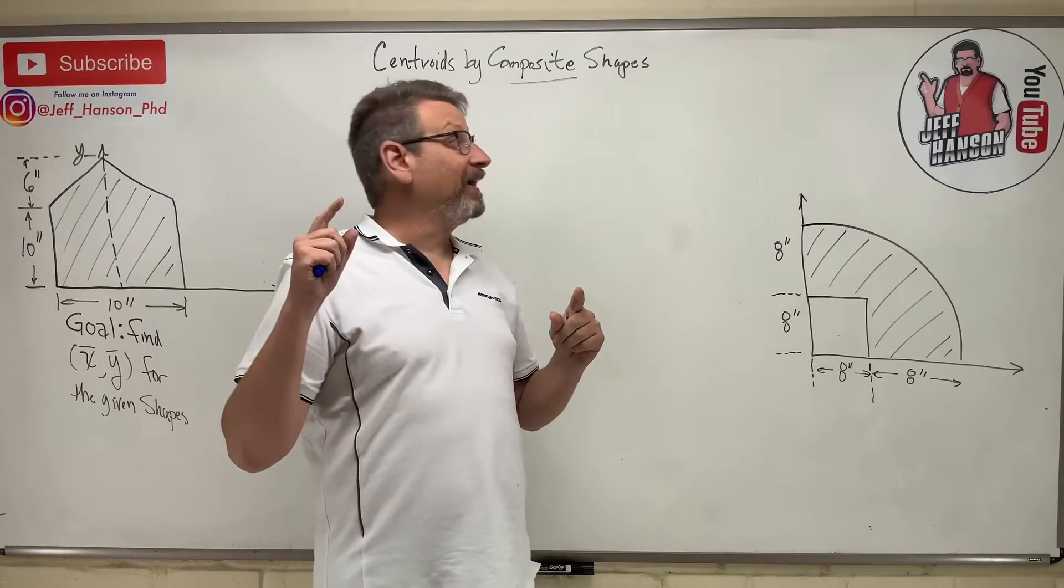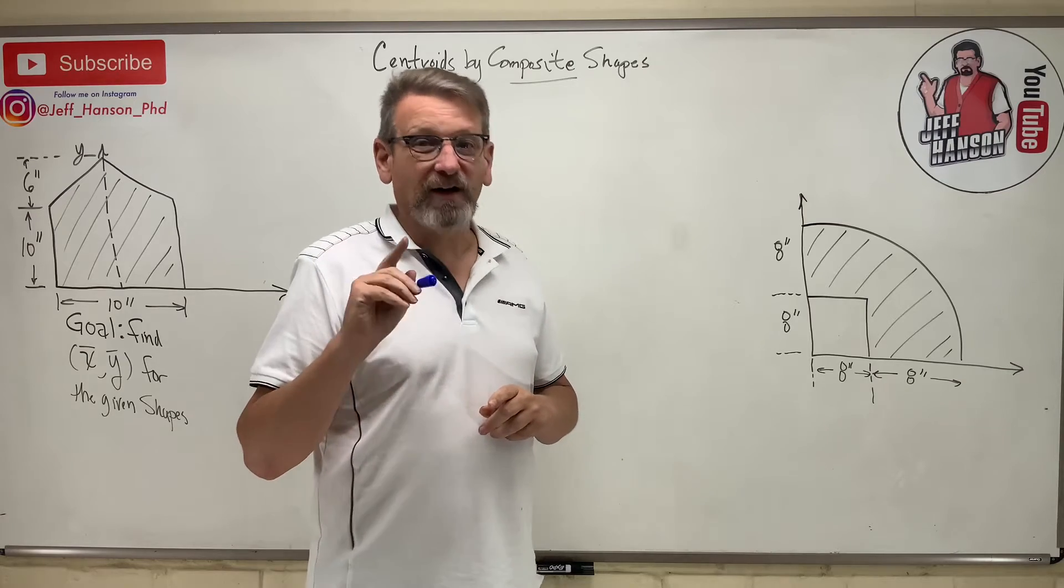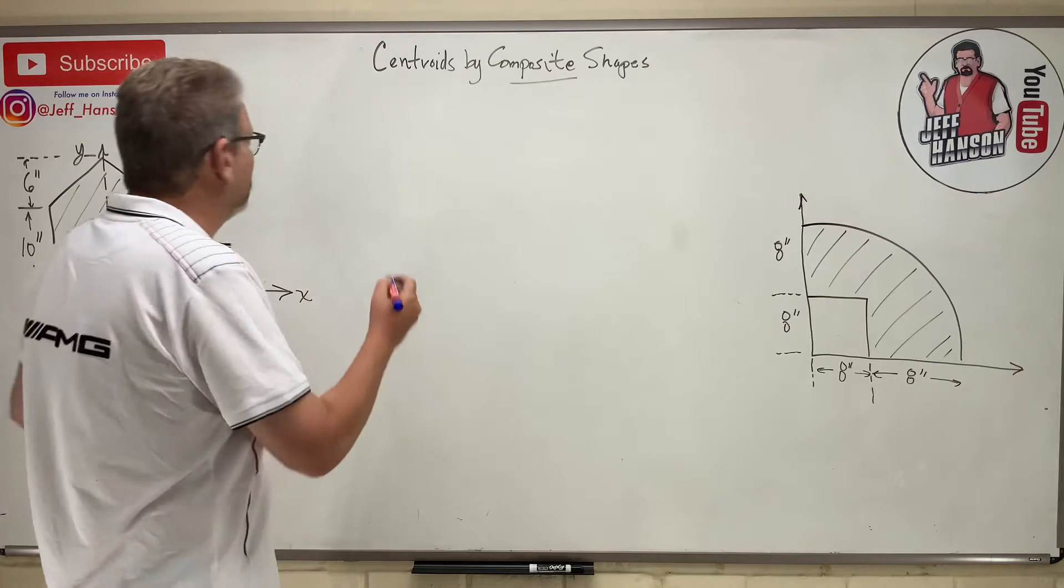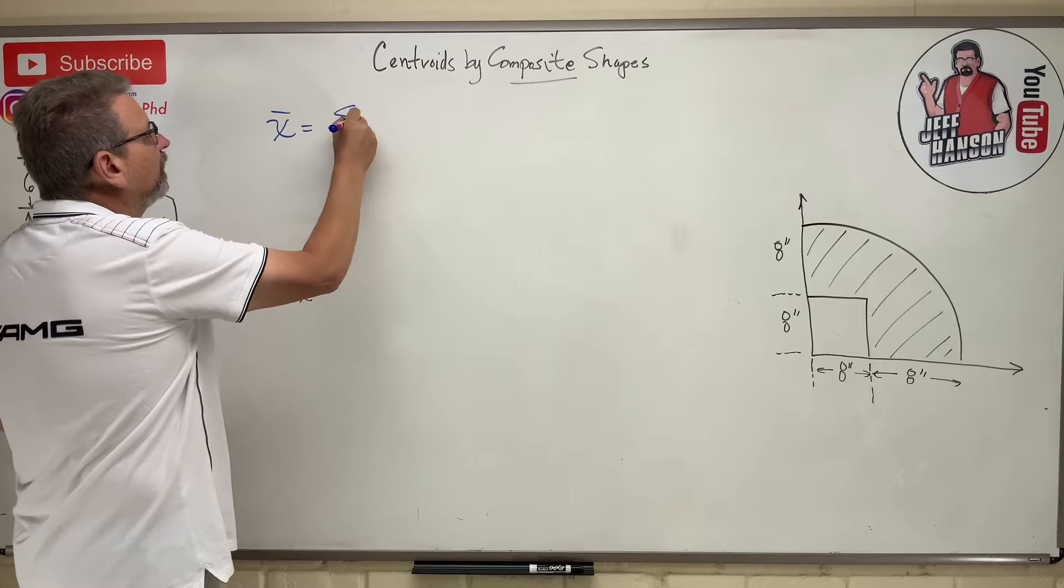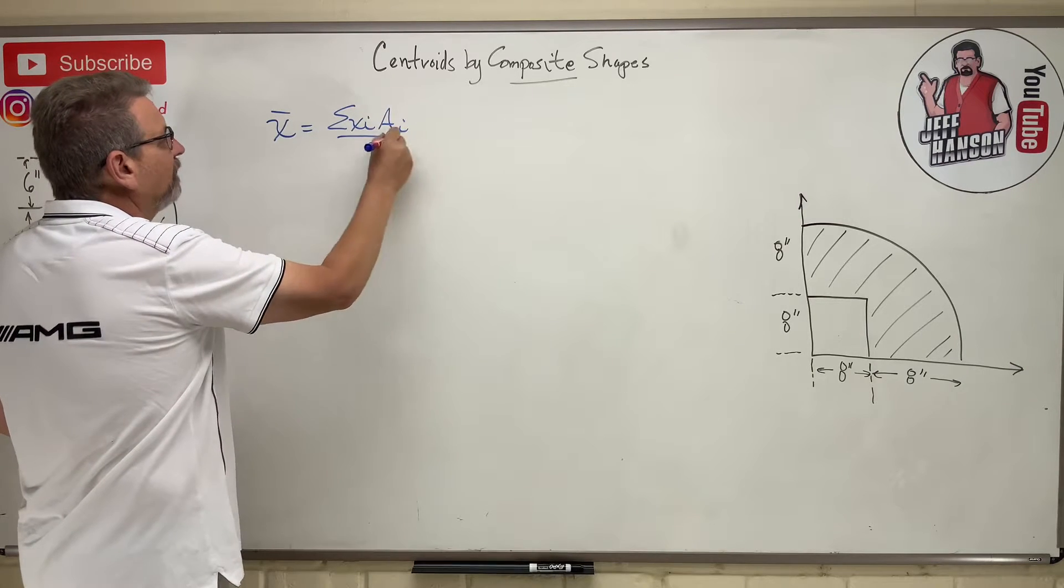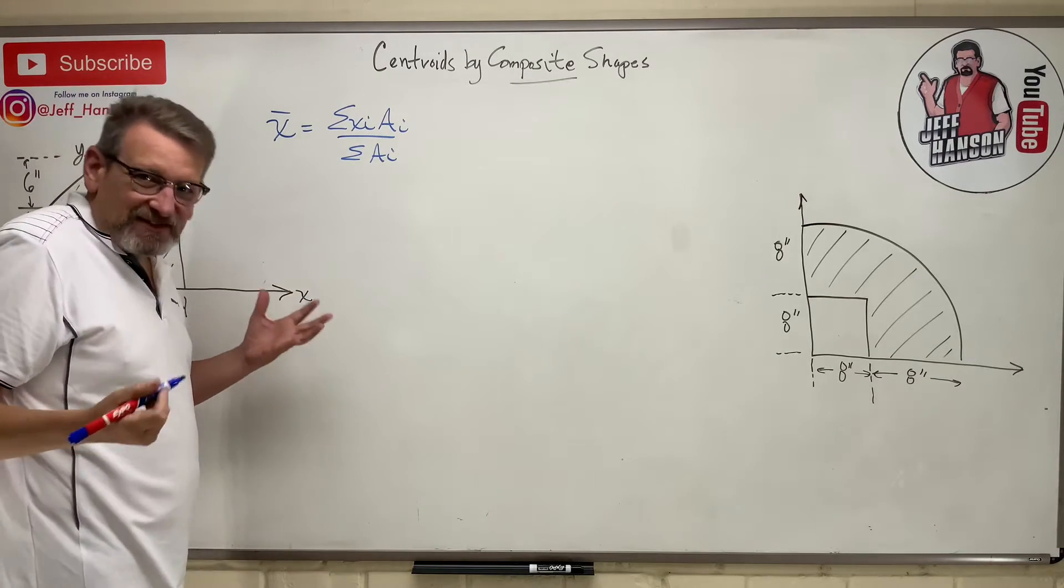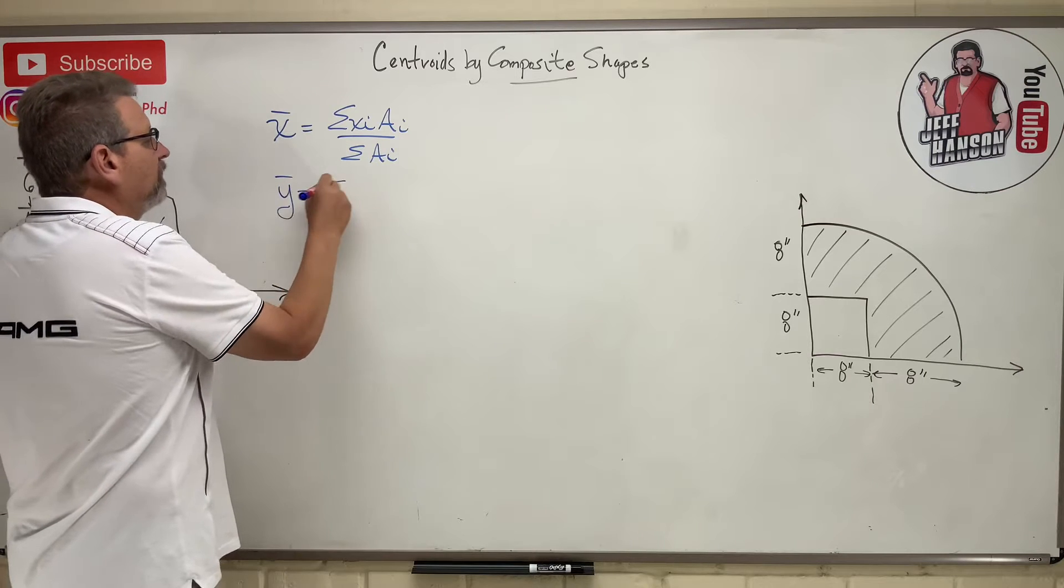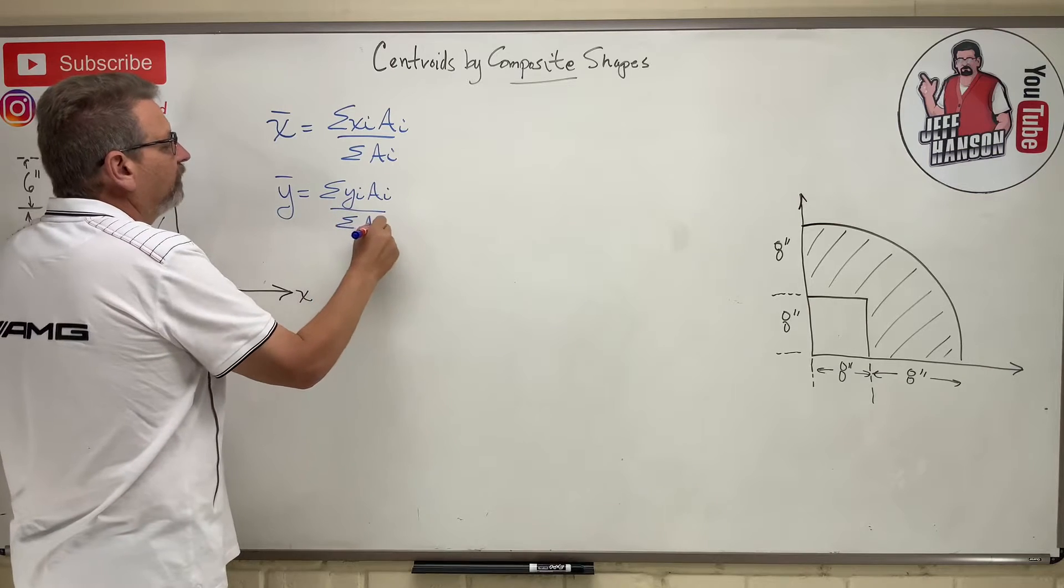Hey friends, we're back. We're talking about centroids and the method of composite shapes. We remember our centroid equation that we talked about before, which is x-bar equals the sum of x sub i times a sub i divided by the sum of a sub i.